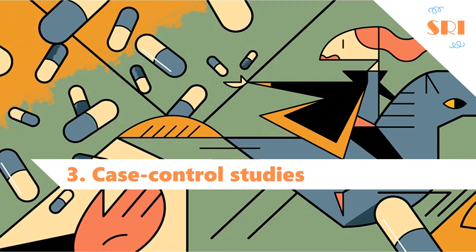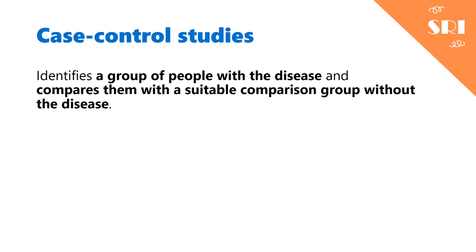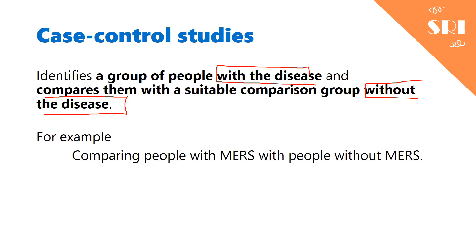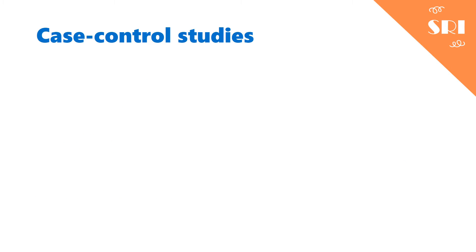The third type of observational studies is case-control studies. Case-control studies identify a group of people with the disease and then compare them with another group without the disease. For example, we find a group of people with Middle East Respiratory Syndrome and compare them with people without it. This helps us better understand the disease, and these studies are almost always retrospective.